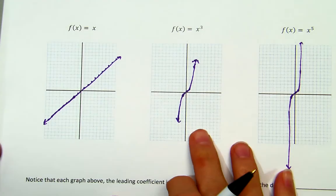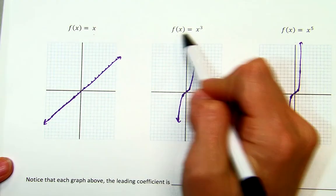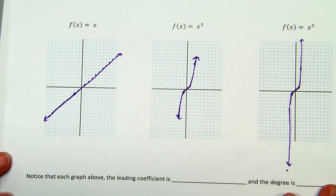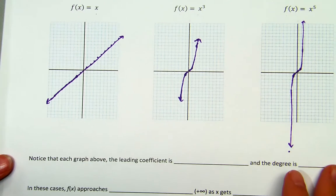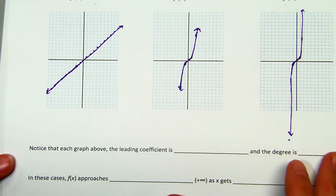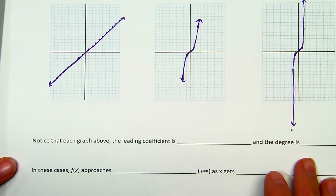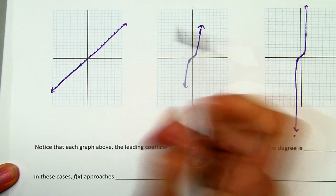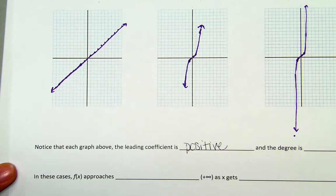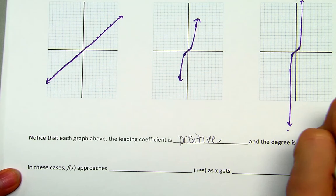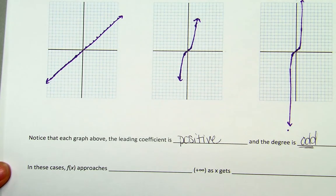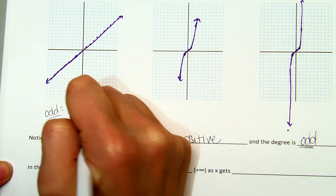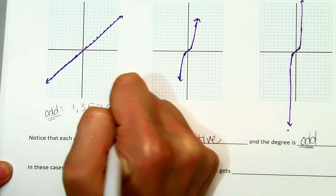So in your notes, you're given three graphs. f(x) = x, f(x) = x³, and f(x) = x⁵. And in all three of them, there's a couple key things that happen. The first is, we notice that each graph above, the leading coefficient is positive. More explicitly, it's actually 1 in this case. But it's a positive 1. And your degree is odd. And if you remember what odd numbers are, odd numbers start with 1, 3, 5, 7, 9, and continue going.